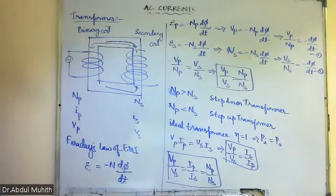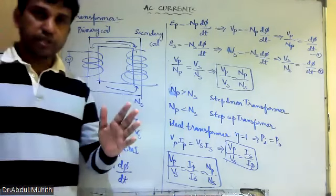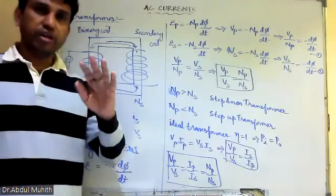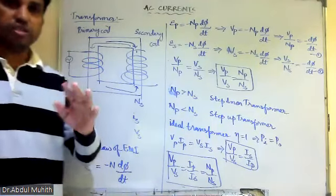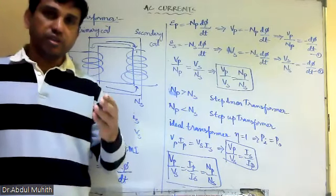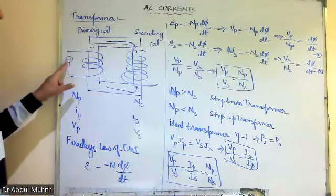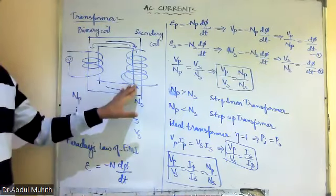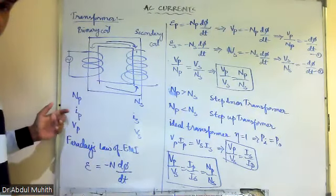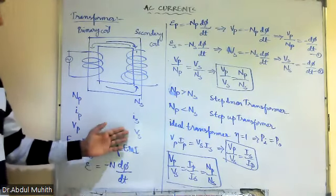A transformer is a device which transfers electric energy from primary windings to secondary windings. Efficiency η = output/input × 100%. If efficiency is 100%, it is an ideal transformer. We can write η = output energy/input energy × 100%, or equivalently η = power output/power input × 100%.